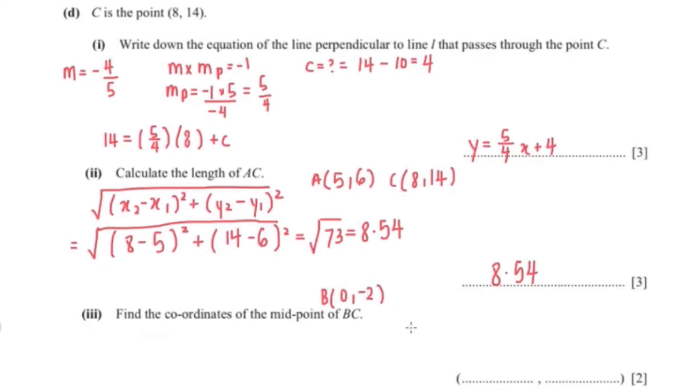So our B coordinates is 0 and negative 2. So the formula for finding the midpoint of a line is x2 plus x1 over 2 and y2 plus y1 over 2. So now I'll just substitute my coordinates in so that's 0 plus 8 over 2 and negative 2 plus 14 over 2. And that would give me 4 and 12 divided by 2 is 6. So the midpoint of the line B to C is 4 and 6.